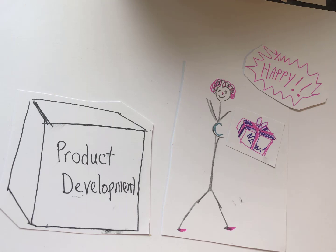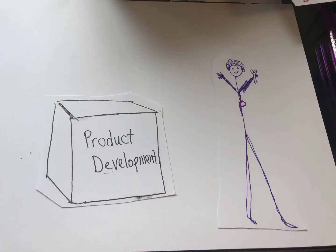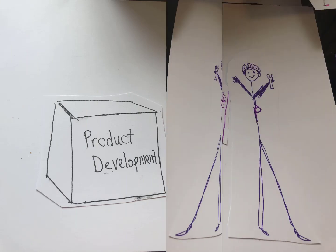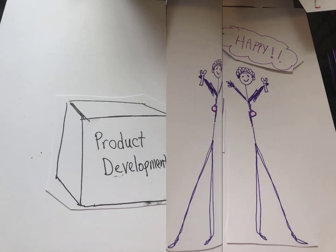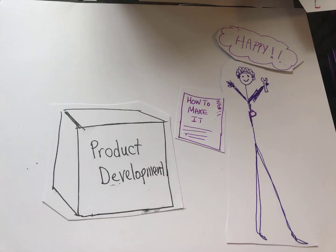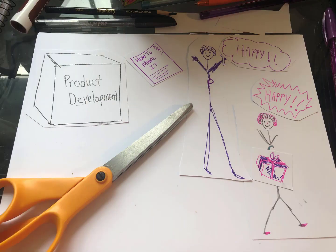And then the customer will be really happy. But you can't just make that product directly — you need a plant to make the product. And the plant needs to know how to make the product. So you have to give them the process to make the product, and then the plant will be happy.